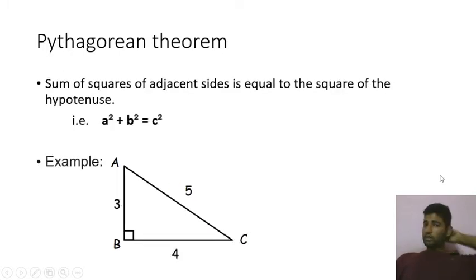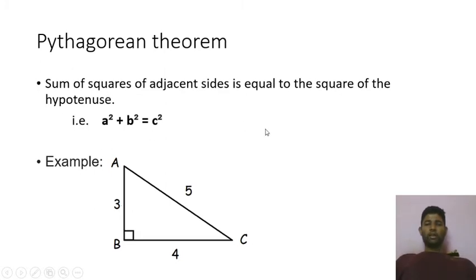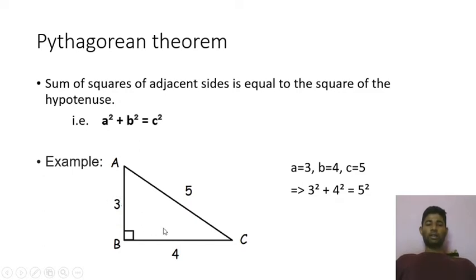So now, the Pythagorean theorem: in a right angle triangle, when you add the squares of the lengths of the adjacent sides, it will be equal to the square of the hypotenuse. Here you can see the formula. When we apply the values into this formula, we get three squared plus four squared equals five squared. Three squared and four squared are the squares of the lengths of the adjacent sides AB and BC, and five squared is the square of the length of the hypotenuse AC.